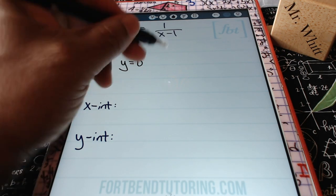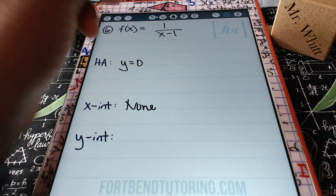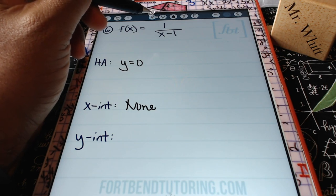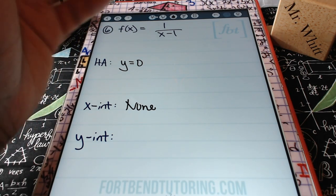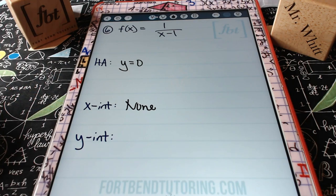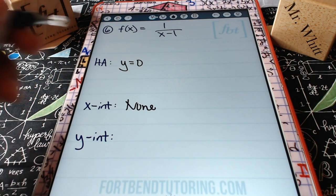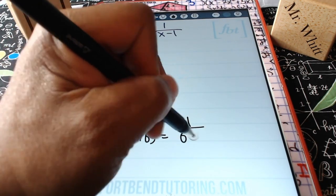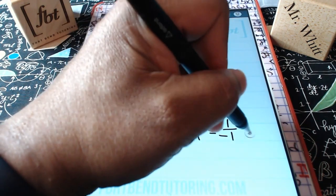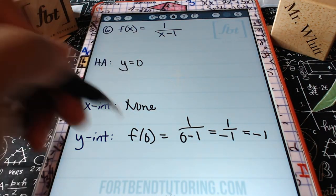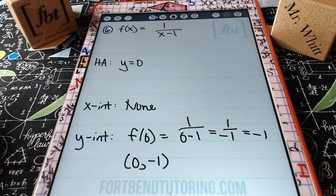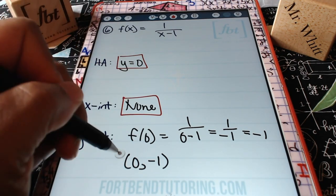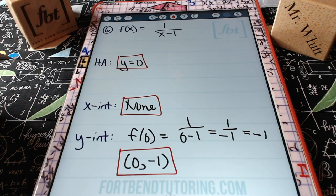For the y-intercept using the reduced form: f(0) = 1/(0-1) = -1. So the y-intercept is (0,-1). Summary: horizontal asymptote y=0, no x-intercept, y-intercept at (0,-1), hole at (3,1/2), vertical asymptote x=1.